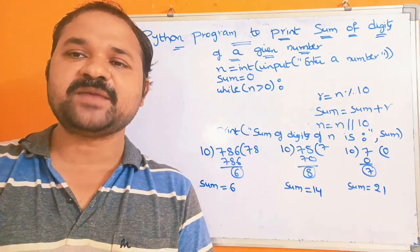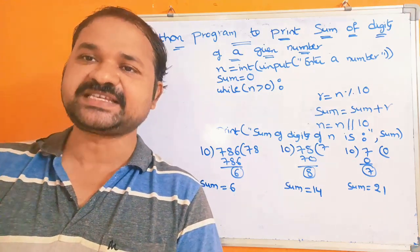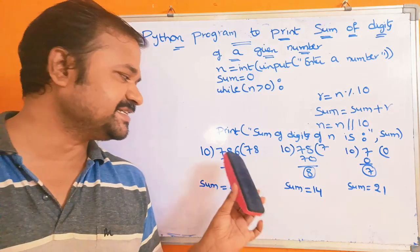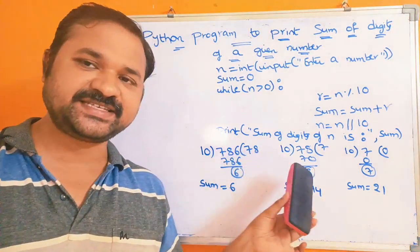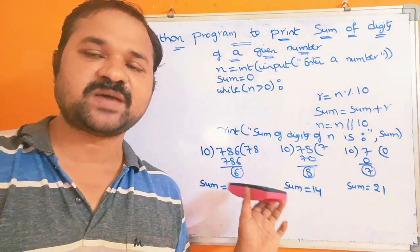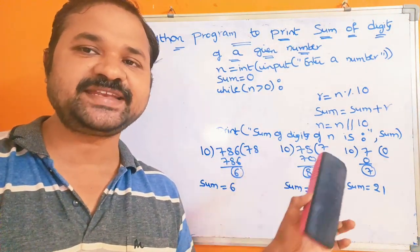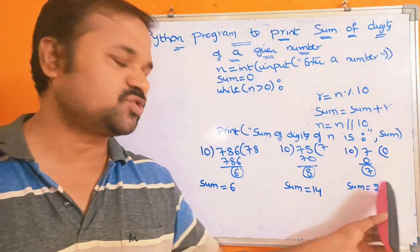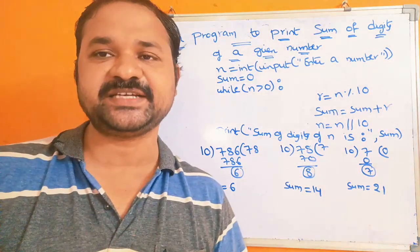Let the number be 786. The digits in 786 are 7, 8, and 6. So the sum of 7, 8, and 6 is 21, and 21 will be the result.